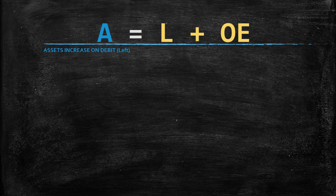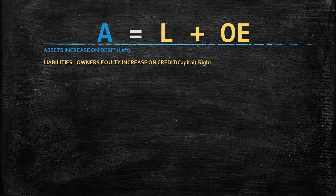Now, assets increase on the debit side, which is the left hand side. And liabilities plus our owner's equity increase on the credit side, the right side. Just a note here that capital is the same thing as owner's equity.